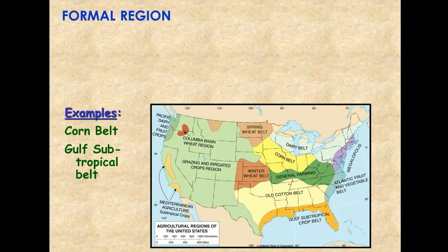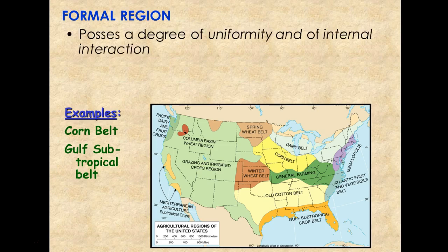In the study of regions in geography, we distinguish two types of regions. The first and most common type is the formal region. Formal regions possess a degree of uniformity and internal interaction. Here we see agricultural regions of the United States, with examples including the Corn Belt and the Gulf Subtropical Belt as two examples of uniform or formal regions for agriculture in the United States.